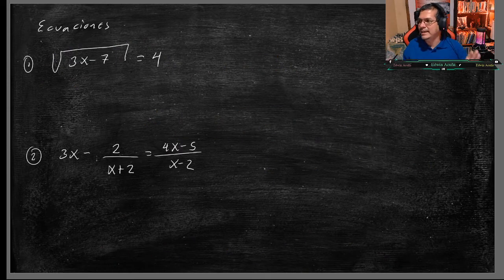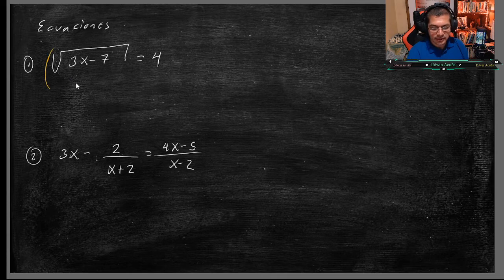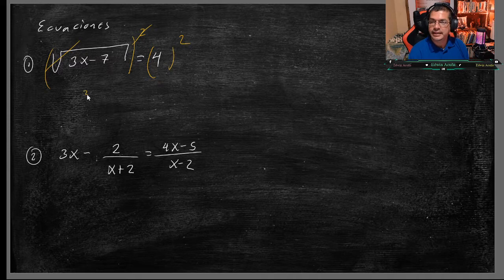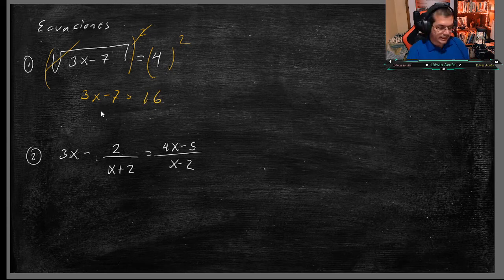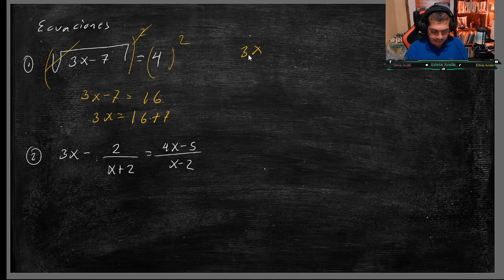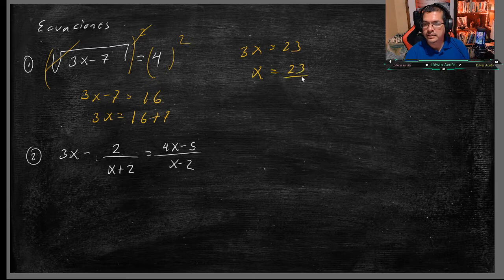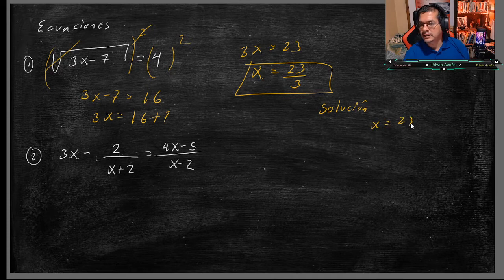Vamos a hacer una ecuación, aquí la ecuación lo primero que tenemos que hacer es eliminar la raíz. ¿Cómo elimino la raíz? Elevamos ambos lados al cuadrado. Entonces, este y este se cancela, me quedaría 3X menos 7, es igual a 4 a la 2, 4 por 4 es 16. El 7 está restando, pasaría a sumar, 3X igual a 16 más 7, sería 23. El 3 se está multiplicando, pasa a dividir, sería 23 sobre 3. Solución, el valor de X va a ser igual a 23 sobre 3.